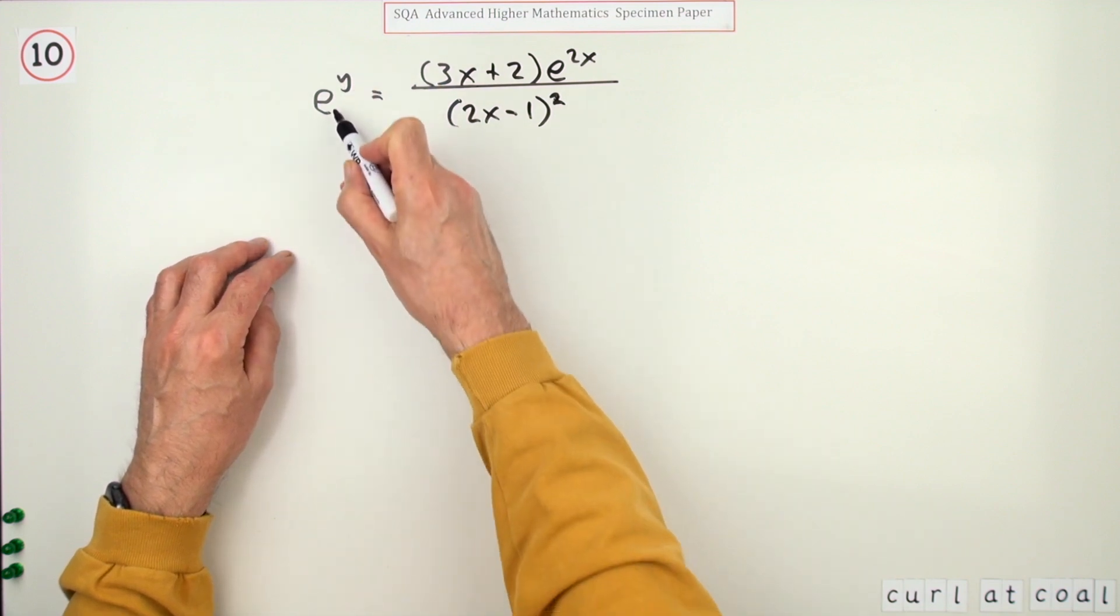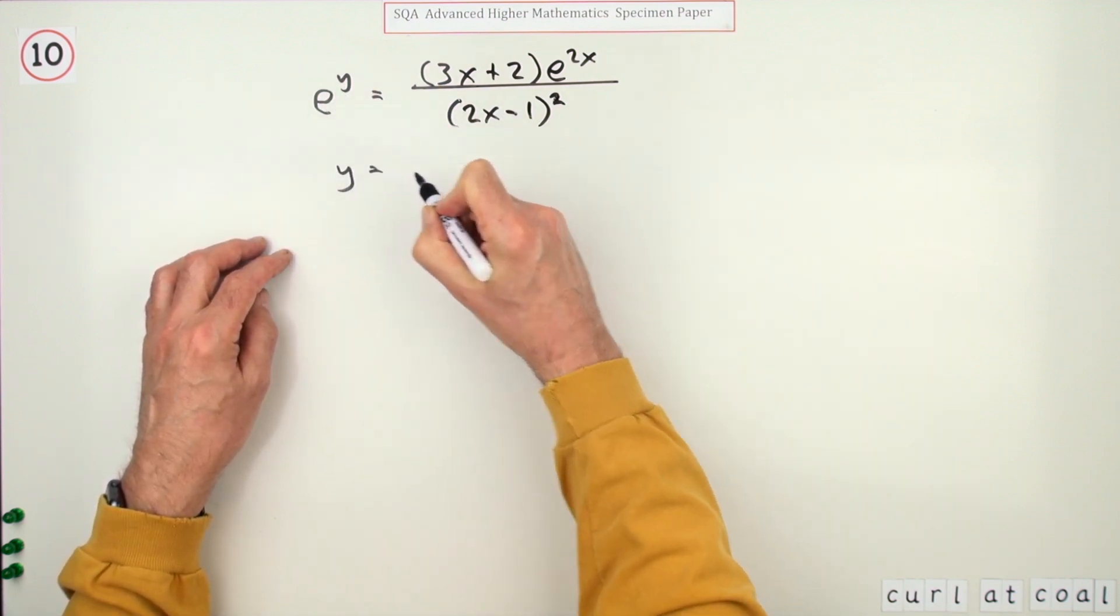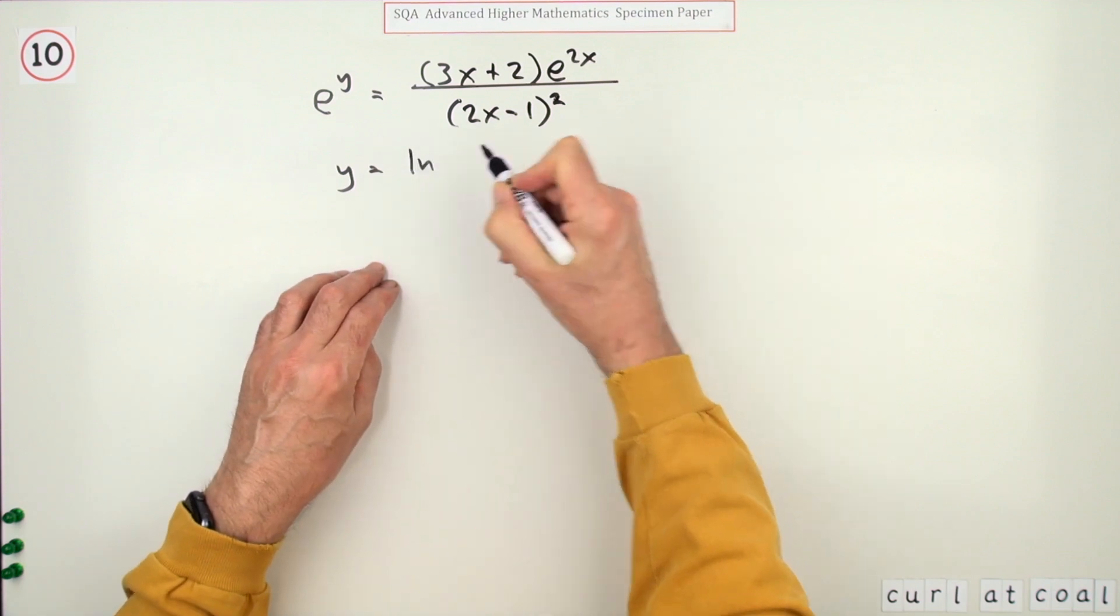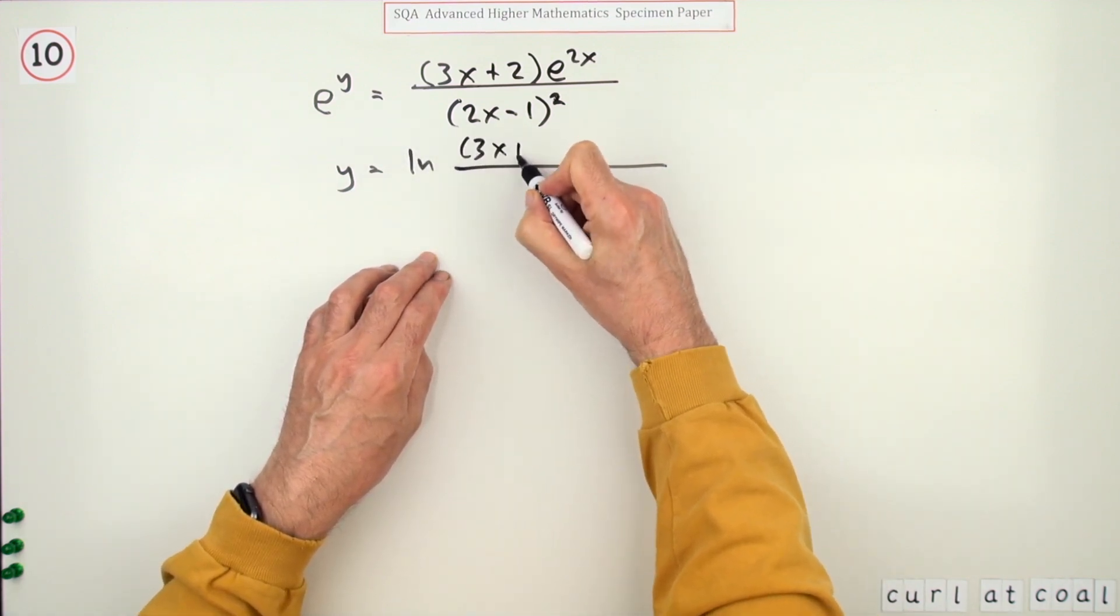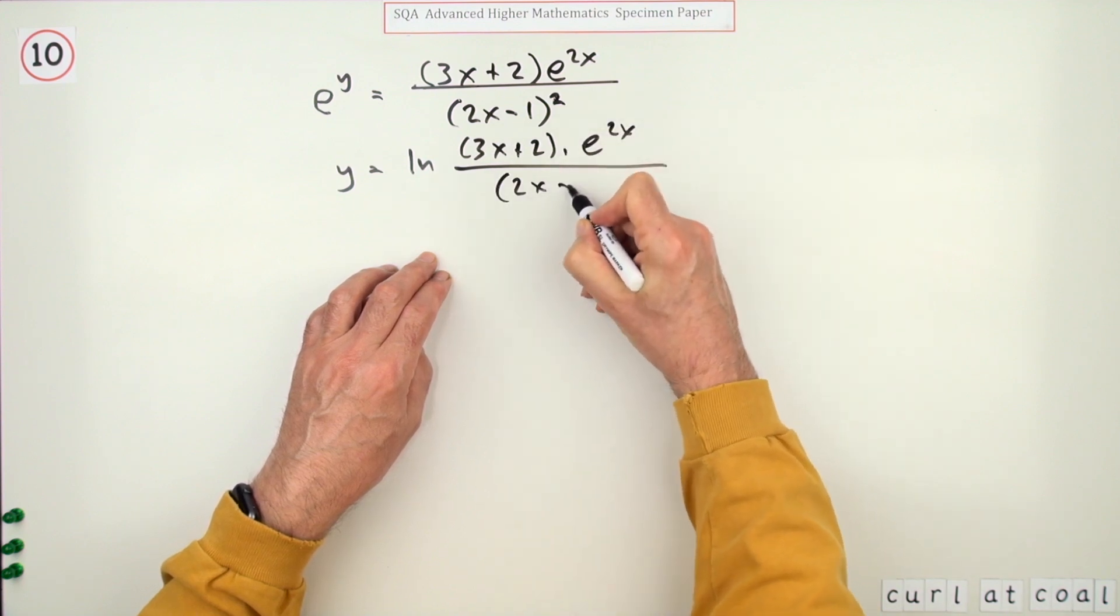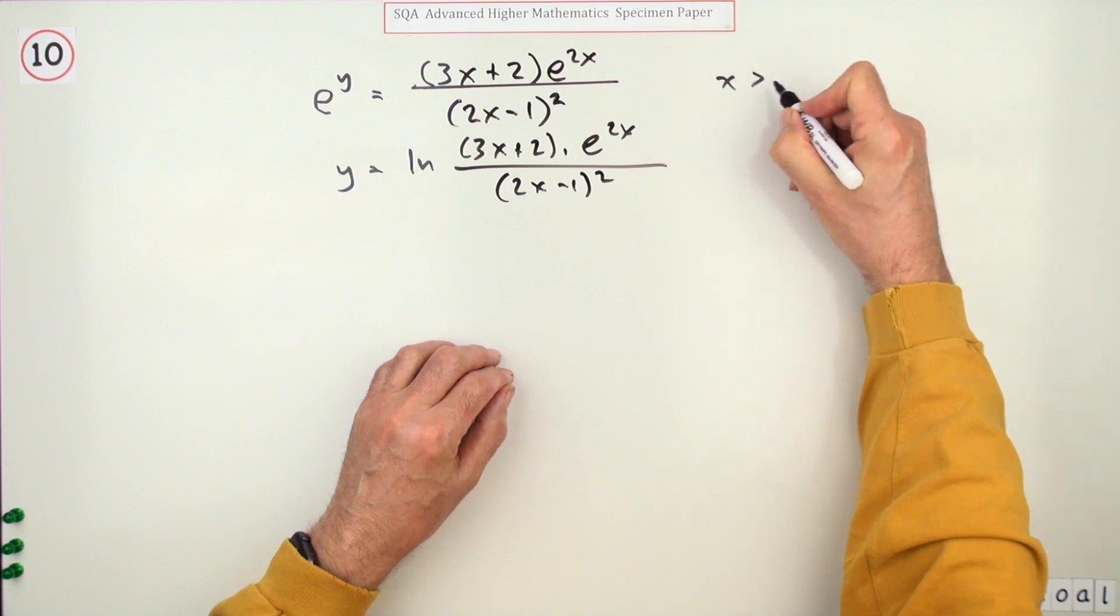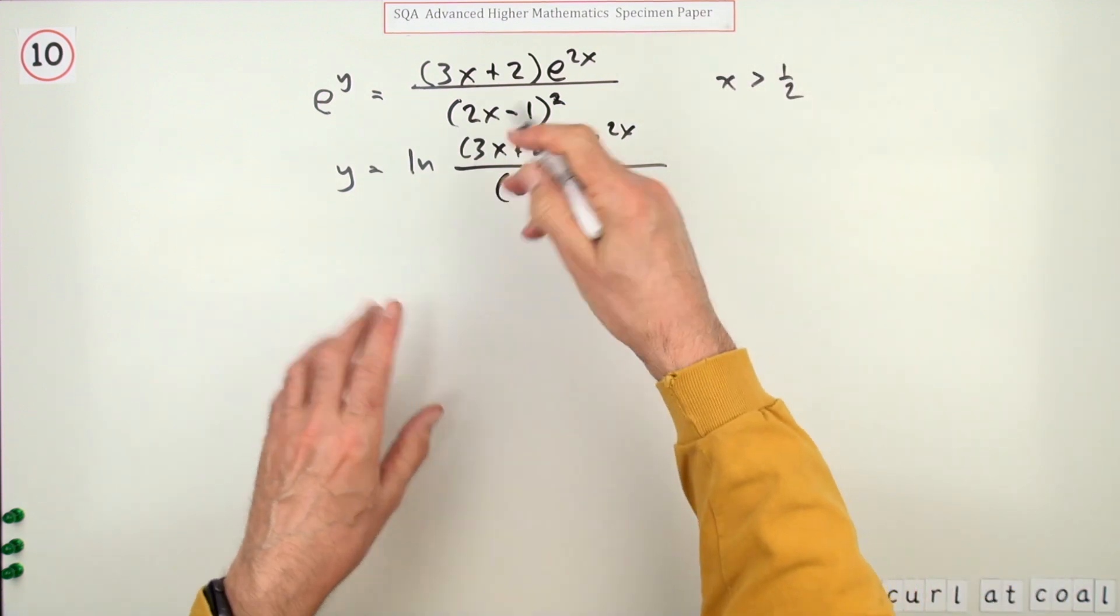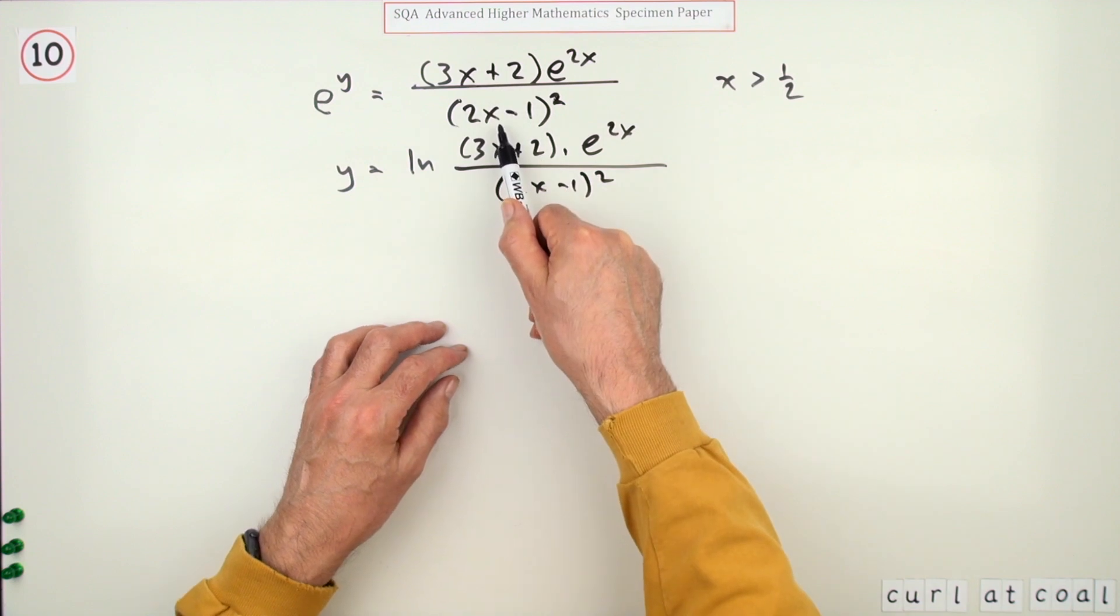That naturally just pops into logarithm anyway. If e to the y is this then y is just going to be a log of that side. It'll be ln of 3x plus 2 times e to the 2x over 2x minus 1 squared. I also did see here that x was greater than a half. So you don't have any moduluses anywhere because both of those expressions are going to be greater than zero.